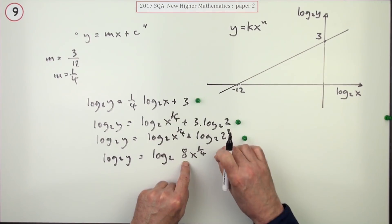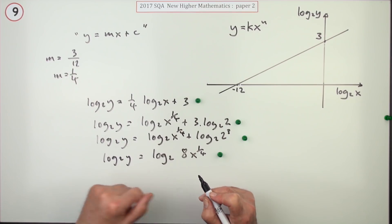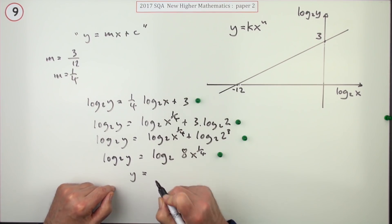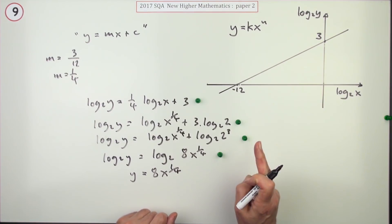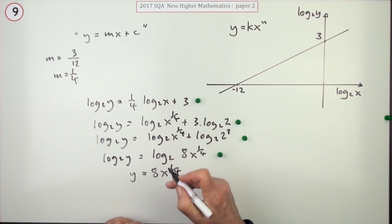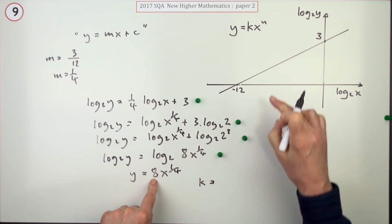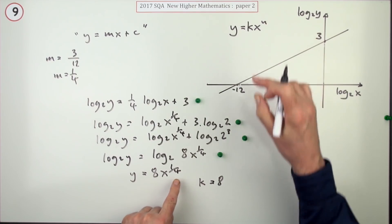If the logarithm equals a logarithm, then the numbers they operate on or the terms they operate on must be the same. So Y equals 8X to the quarter. That doesn't get the mark because the question said state the values of K and N. So I'll express them explicitly: K was the number that multiplies so K is 8, N was the number that gave the power so N is a quarter. That's the mark.